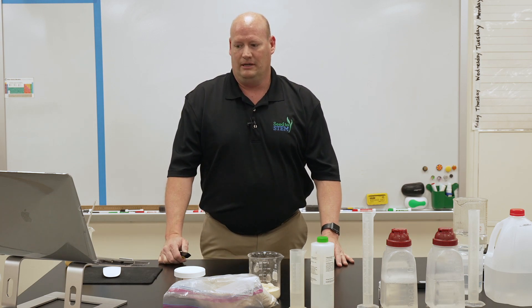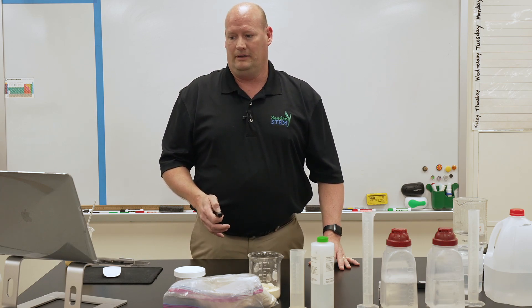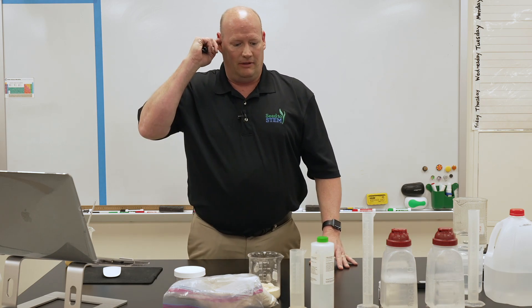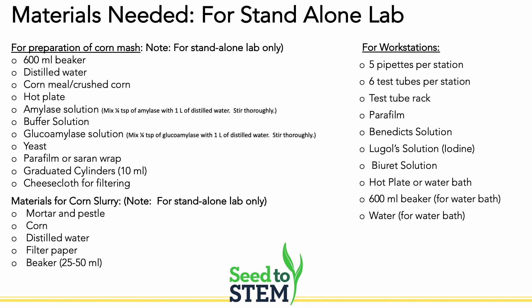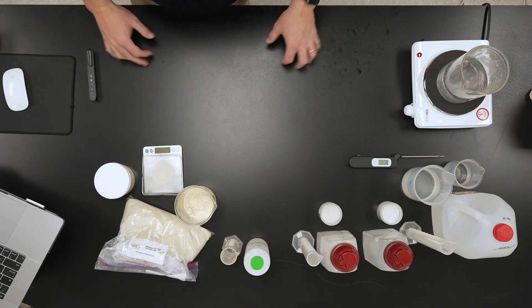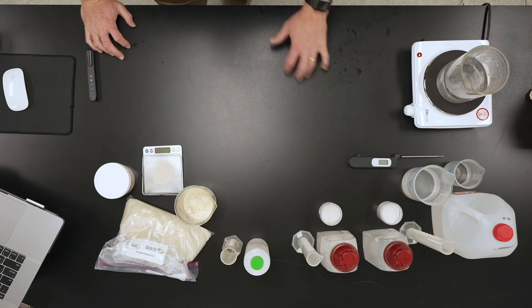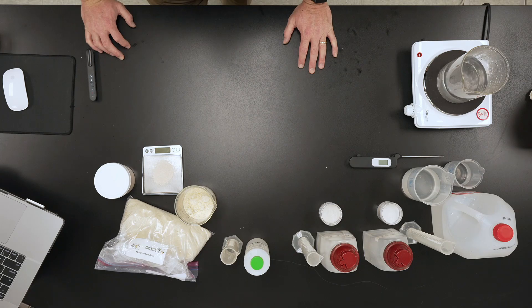What's left over is the DDG — the distiller's dried grains — which is feed for livestock. The whole purpose of this lab is to test the nutrients in that to see if it's viable for livestock. For the standalone lab, there are several materials needed, and these will all be provided to you through the Kansas Corn STEM program: ground corn, buffer solution, enzymes — amylase and glucoamylase — distiller's yeast, and distilled water.